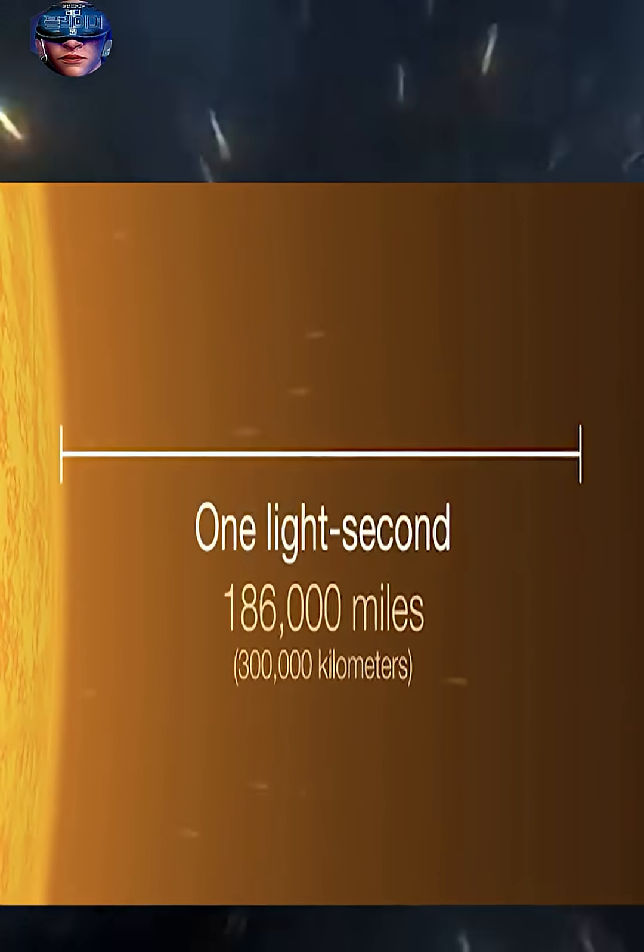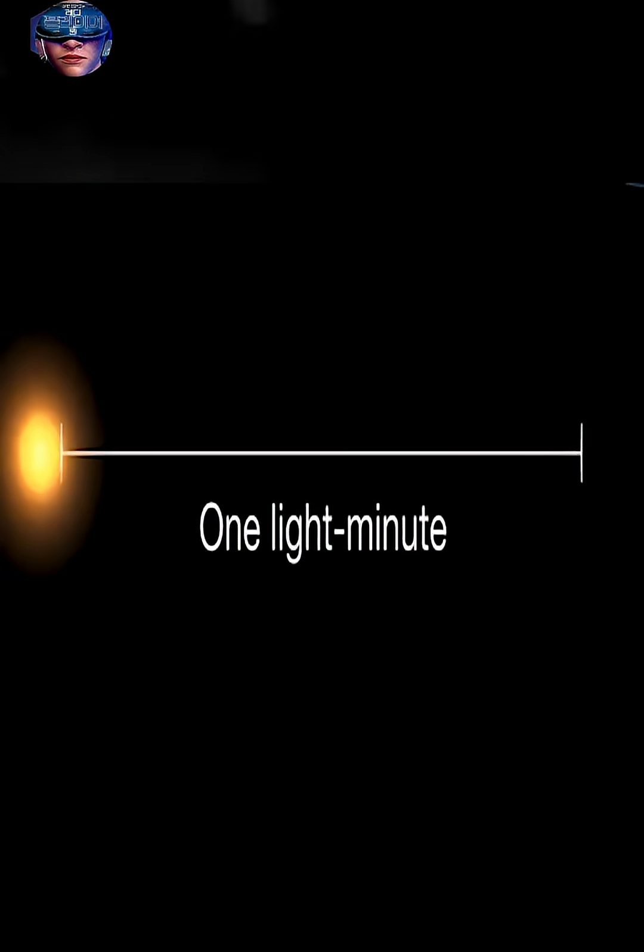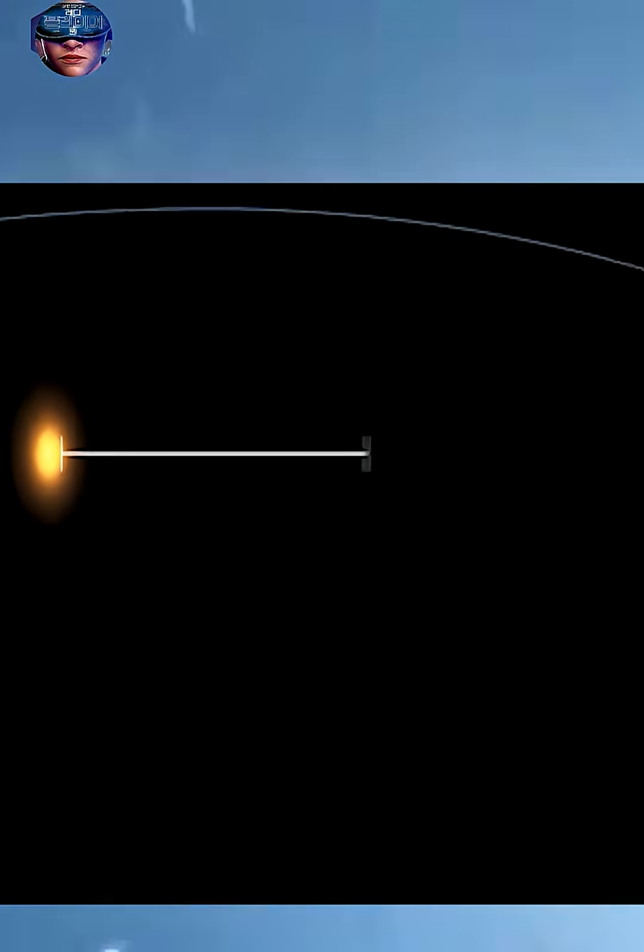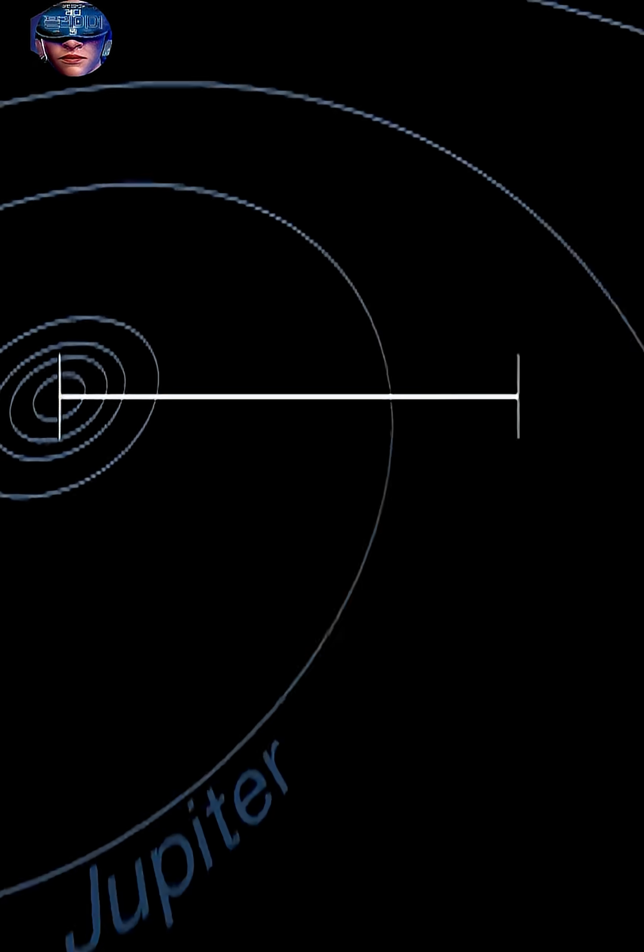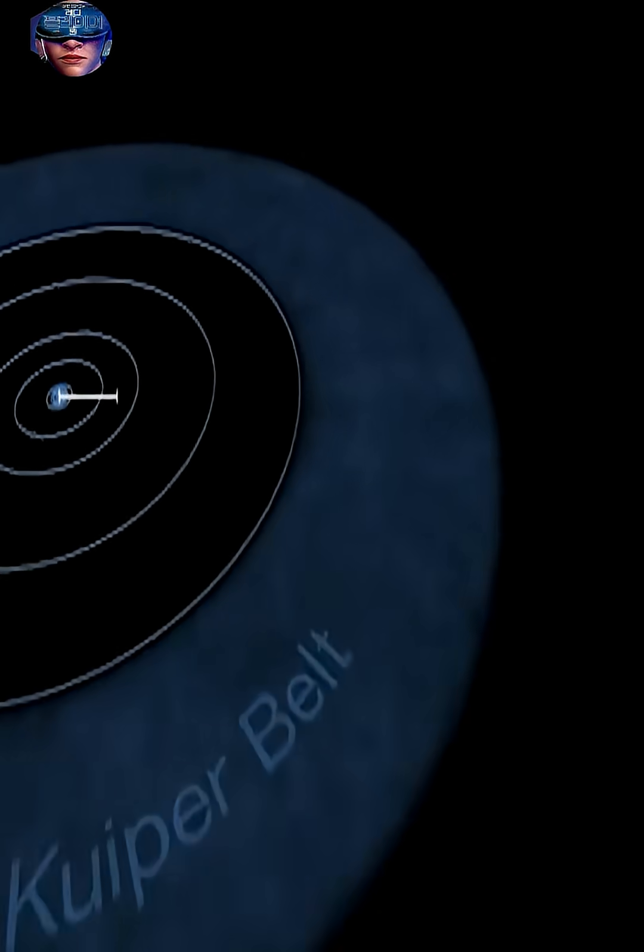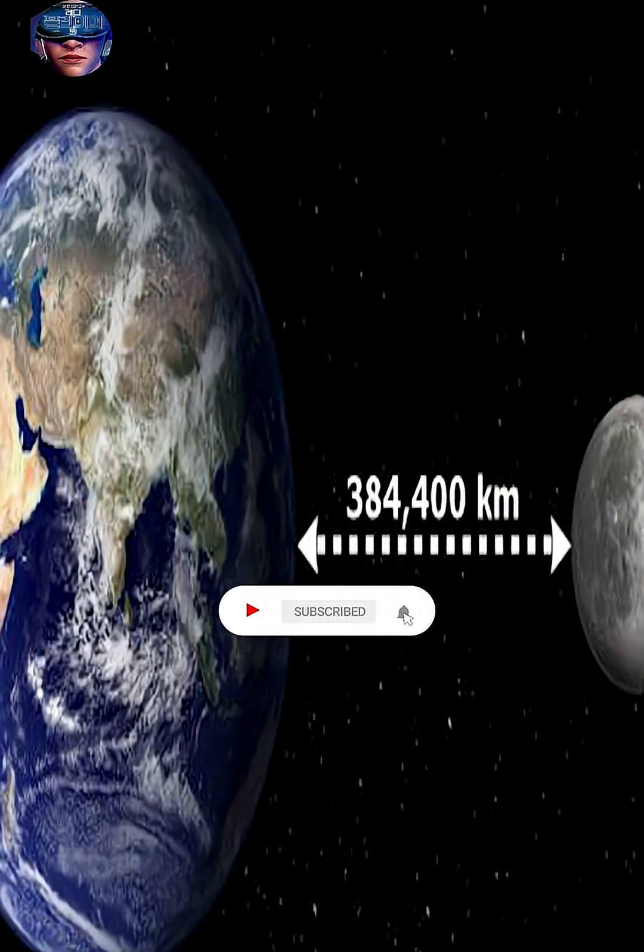And by multiplying the light minute by 8.3 minutes, we get approximately 150 million kilometers. The light you see coming from the sun was emitted 8.3 minutes ago. And the moon is only about 1 light second away from Earth.